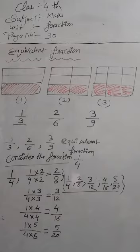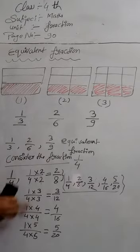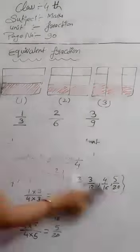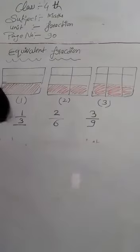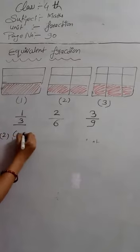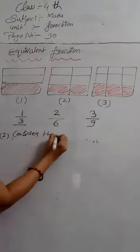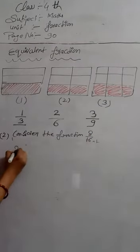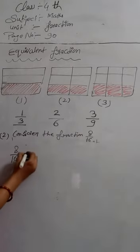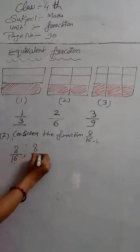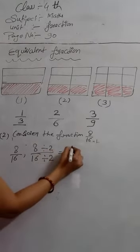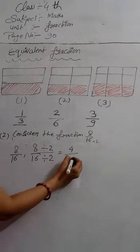Now, consider the fraction eight by sixteen. We will also find equivalent fractions by dividing. The first fraction is eight by sixteen. Now, we will take a second fraction by dividing. We divide by two — two fours are eight, two eights are sixteen. So we get four by eight.